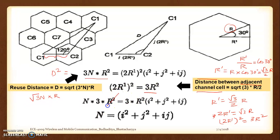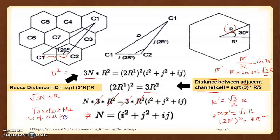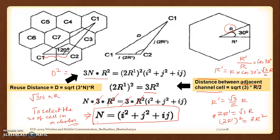So n = i² + ij + j² is the fundamental rule to determine the number of cells in a cluster. This is a very important observation. Most textbooks — including the one we usually refer to, Theodore Rappaport — do not provide this detailed derivation of n = i² + ij + j². But it is a natural question why we use this particular equation. This is one of the easiest methods to find n, though there are other methods too.